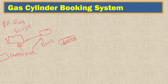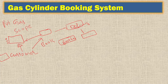Once the customer books, that has to be delivered, so there is a delivery process and the delivery details go to the corresponding delivery table. The main aim is: customers book the cylinder, the company sends the cylinder to the customer, and they collect the money - either cash or online payment.